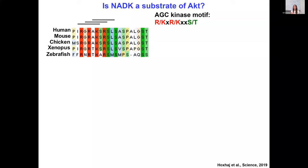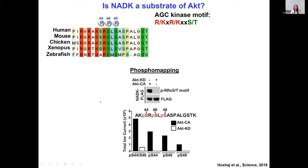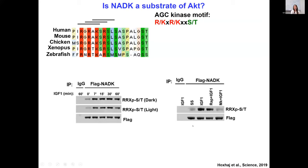We wanted to know whether NAD kinase can be phosphorylated in response to AKT. We were lucky to find a phosphomotif antibody able to detect phosphorylation of NADK. We serum-starved cells, treated them with IGF-1 over a time course, purified flag-NADK, and looked at phosphorylation. Within seven minutes of IGF-1 treatment, we see a robust phosphorylation of NAD kinase. The IGF-1-mediated phosphorylation of NAD kinase was completely blocked by the AKT inhibitor MK2206, but not by rapamycin, the mTORC1 inhibitor, suggesting this is an AKT-mediated phosphorylation event.